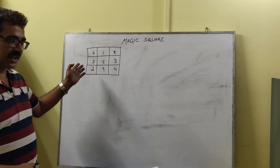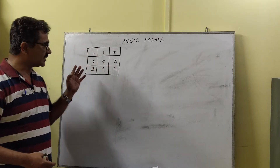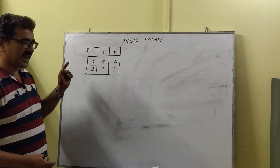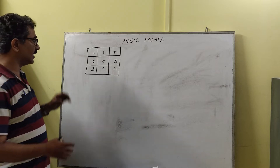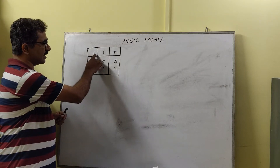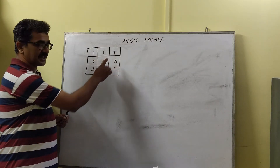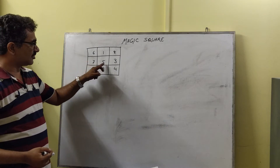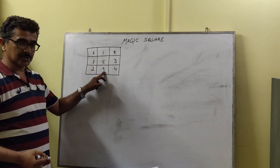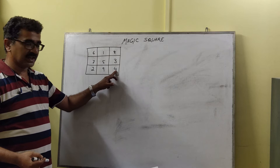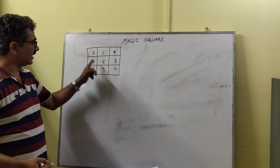Here I have given as an example a 3x3 matrix, where the sum of each row, column, and diagonals are all equal. You can see over here: 6 plus 1 is 7, 7 plus 8 is 15. So 7, 5, 12, 12 plus 3 is 15. And 9, 2, 11, 11 plus 4 is 15. Even the diagonals are 15.